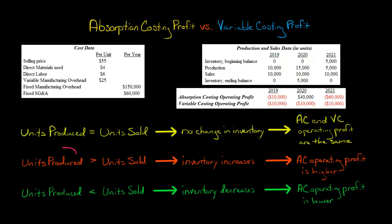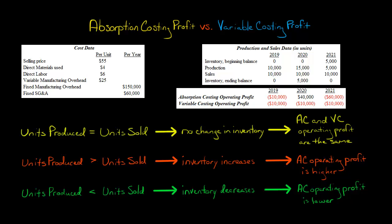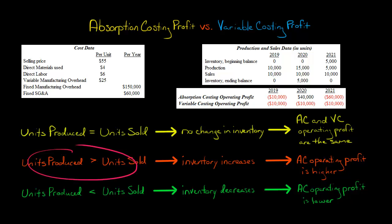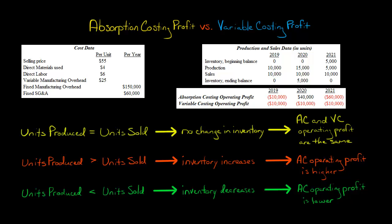However, if a company produces more units in the period than it happens to sell, then inventory is going to go up. In that scenario, the operating profit under absorption costing would be higher than the operating profit would be under variable costing. The reason is, when you produce more than you sell, inventory goes up, and some of the fixed manufacturing overhead from the current period is being deferred to a future period.